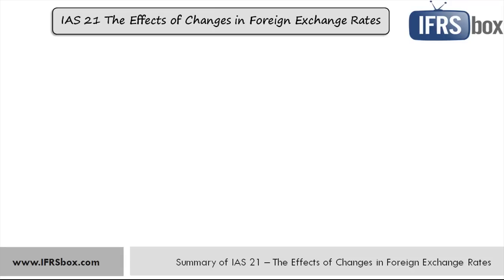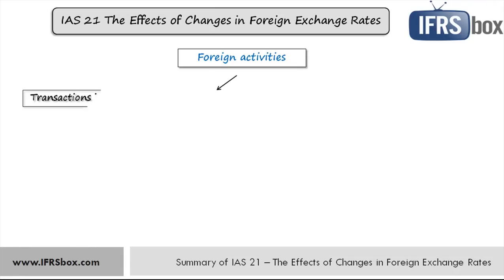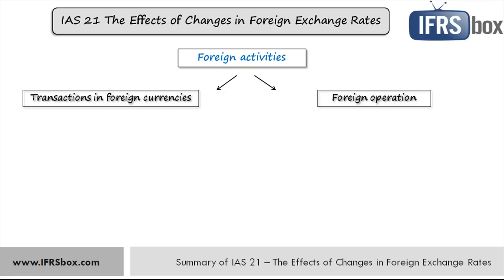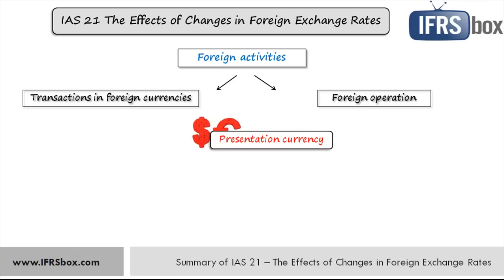In today's world, entities carry out their foreign activities in two basic ways. They either have some transactions in foreign currencies — for example, they might buy goods from international suppliers and pay in foreign currency — or they can have a foreign operation, which can be a subsidiary, associate, joint venture, or even a branch operating abroad. On top of that, any entity can decide to present its financial statements in some foreign currency other than their own, so the presentation currency can be different.